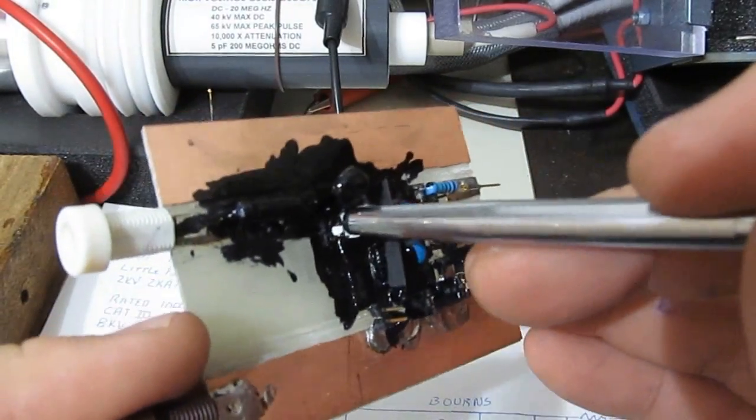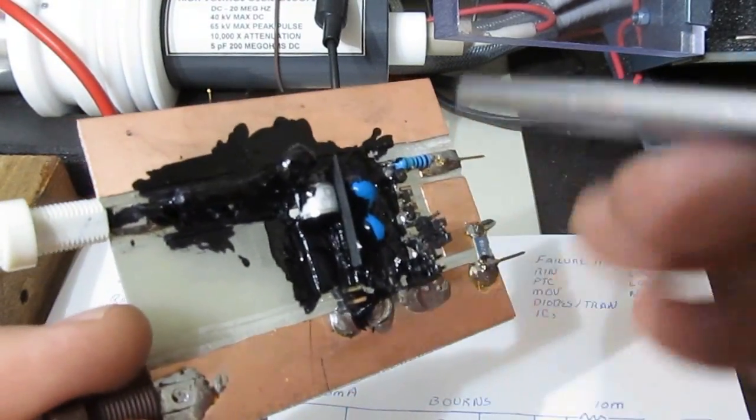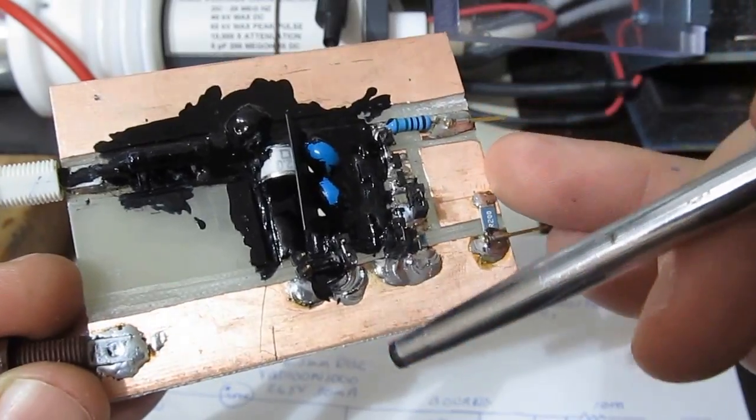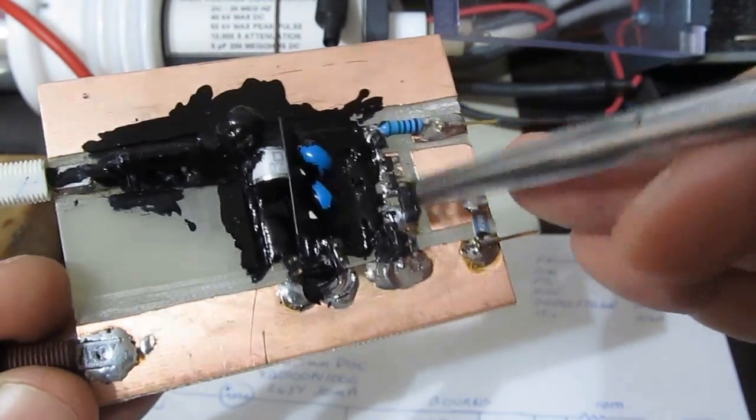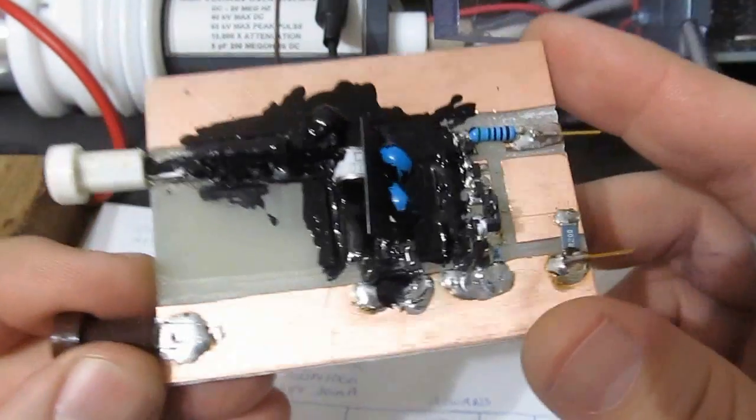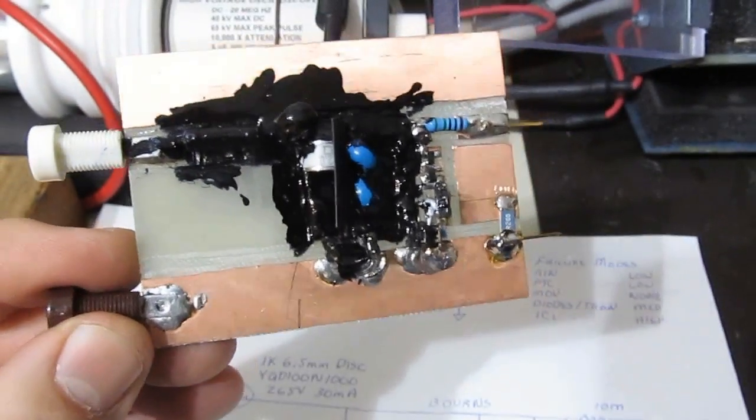If the GDT, for example, were to switch slower than the MOVs, I would be concerned that sensitive ICs or transistors or diode clamps would actually fail. So let's go ahead and hook this thing up and we'll take some measurements.